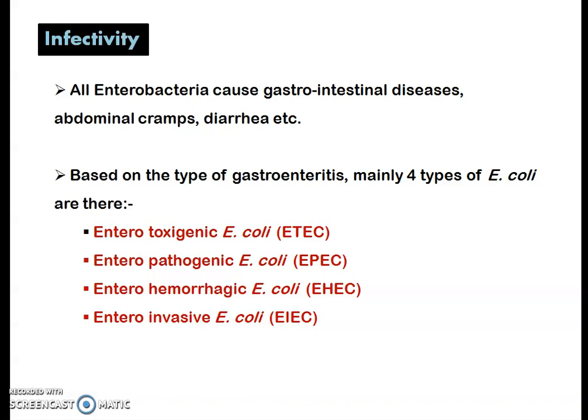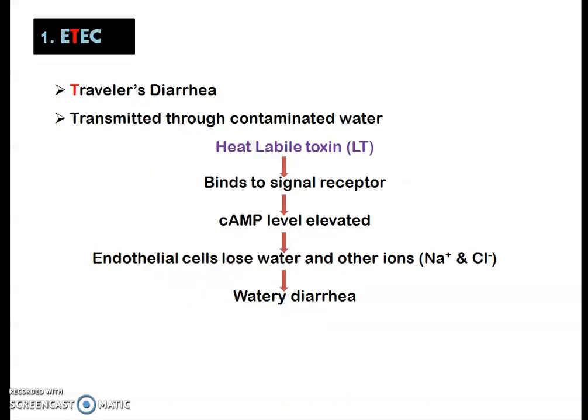Enterobacteria cause gastrointestinal diseases including abdominal cramps and diarrhea. Based on the type of gastroenteritis they cause, E. coli are mainly four types: enterotoxigenic E. coli (ETEC), enteropathogenic E. coli (EPEC), enterohemorrhagic E. coli (EHEC), and enteroinvasive E. coli (EIEC).